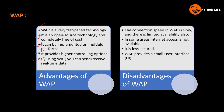The disadvantages of WAP include slow connection speed and time limitations. Availability is also limited — in some areas, internet access is not available. It is less secure and provides only a small user interface for users.